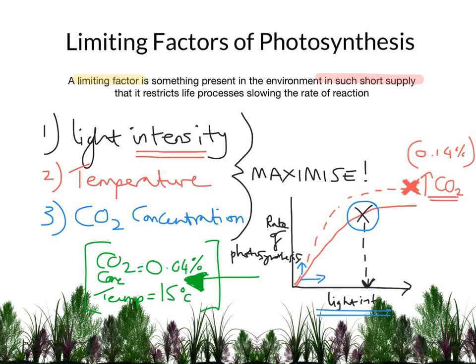If you have a greenhouse or family members with a greenhouse, they will be very much aware of this. They're trying to cultivate plants and grow them, so they'll know how to maximise light intensity, how to maximise temperature without overdoing it, and how to raise CO2 concentration — maybe with the use of a paraffin heater, for example, burning paraffin to release CO2.